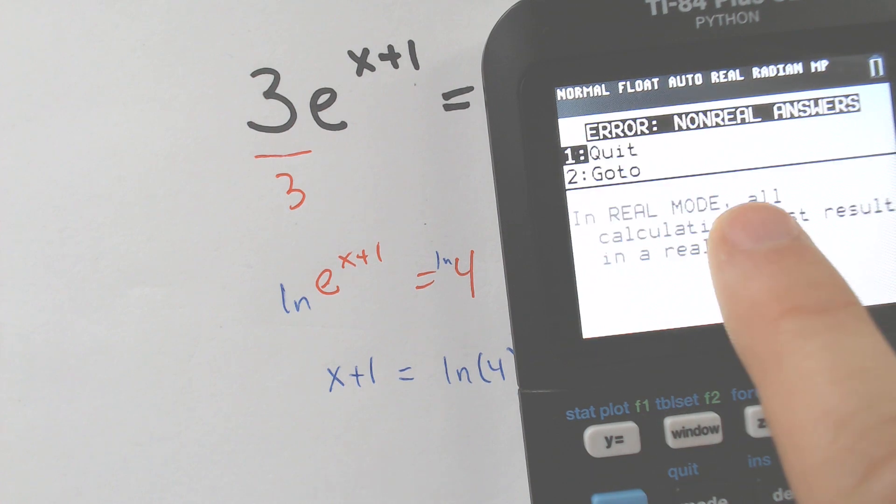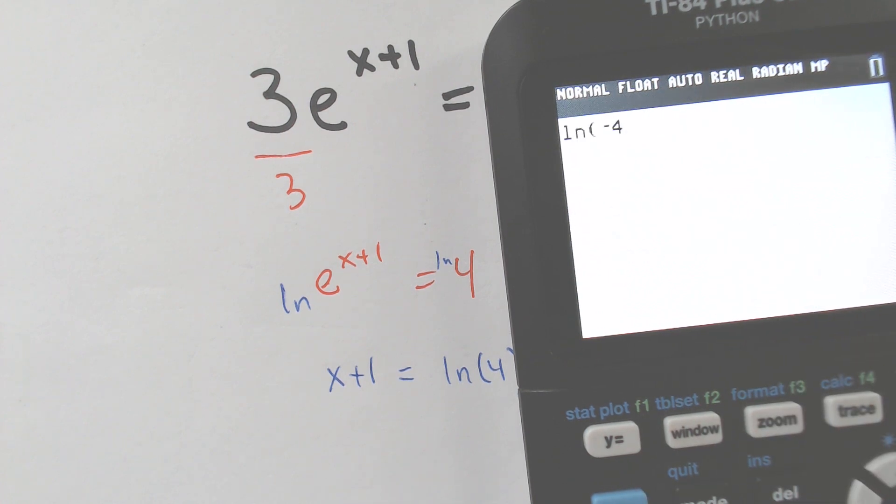LN of negative 4, your calculator will tell you, oh no, non-real numbers.